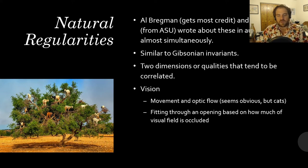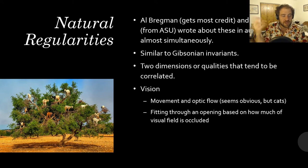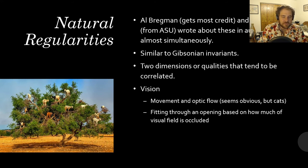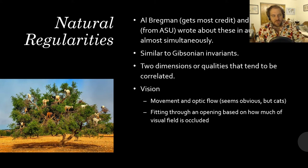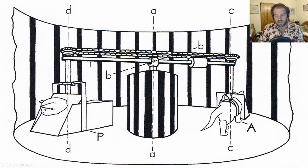Take movement and optic flow. Optic flow is the way things move on your retina as you walk — stuff moves past you and behind you. Movement and optic flow are correlated. But do we actually know this? An experiment was done with two cats: Cat A (Alfie) was able to walk around freely and see lines pass on his retina as he moved.